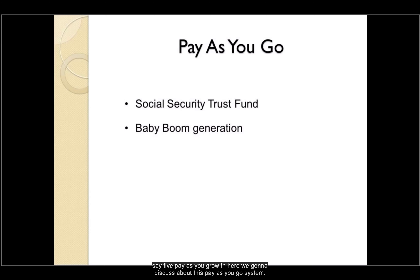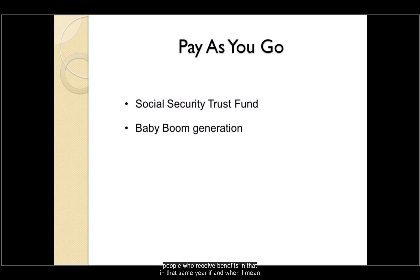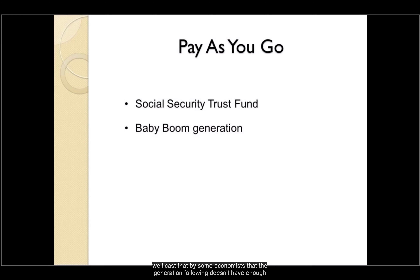The Social Security Trust Fund is a large account where all the payroll taxes go. It was originally designed to operate as a modified pay-as-you-go system where the money collected each year mostly pays for people who receive benefits in that same year. If more money is collected from payroll taxes than is paid out, the Trust Fund runs a Social Security surplus. But the baby boom generation is much bigger than the cohort before or after it, and some economists forecast that the generation following doesn't have enough workers to contribute as much as will be needed under the pay-as-you-go system.